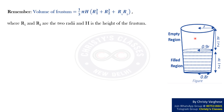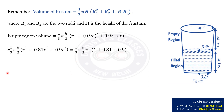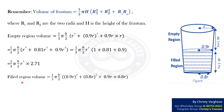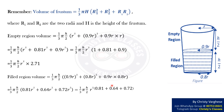Volume of the empty region equals (1/3)π(h/2)(r² + 0.9r² + 0.9r·r), which simplifies to (1/3)π(h/2)r² × 2.71. Similarly, volume of the filled region equals (1/3)π(h/2)(0.9r² + 0.8r² + 0.9r·0.8r), which simplifies to (1/3)π(h/2)r² × 2.17.